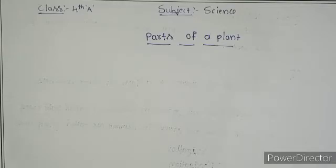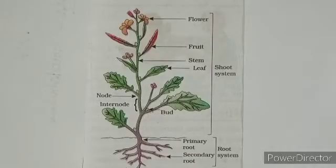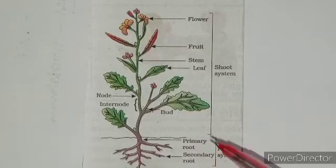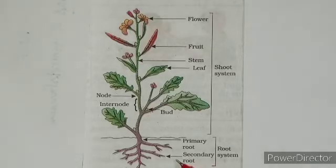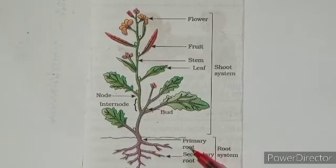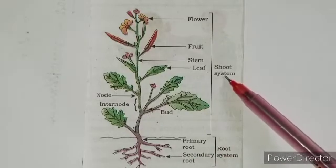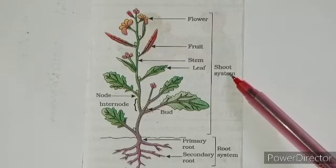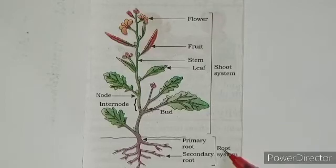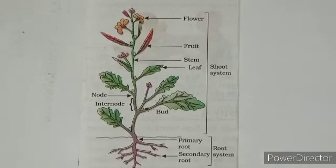Let us learn different parts of a plant and their functions by diagram. Looking at this picture of a plant, each part of the plant has its own work to do, and all these parts work together to keep the plant alive. There are two main parts of a plant: one is the shoot part or shoot system, and the other is the root part or root system.